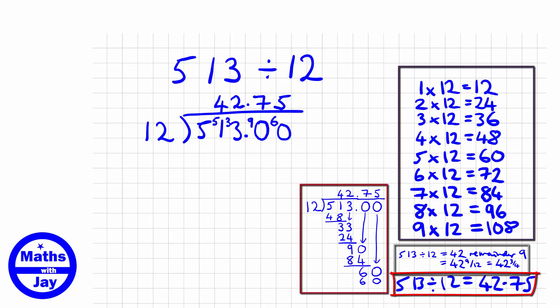So 12s into 60 goes exactly 5 times. And there is our answer. 12 into 513 is 42.75, done by short division this time.